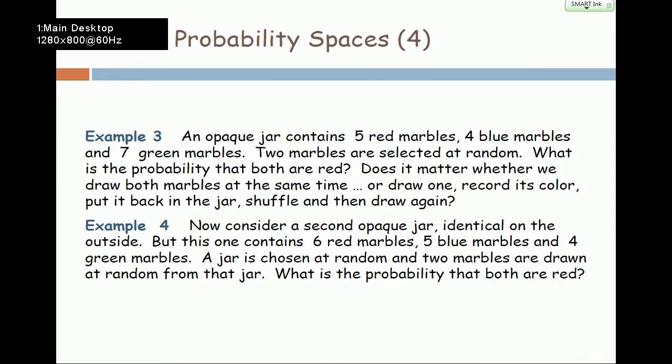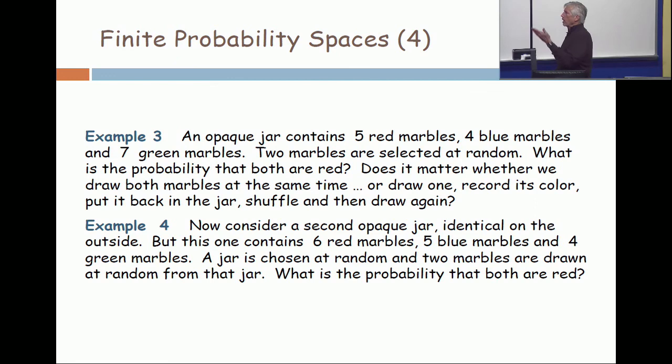We have two opaque jars. The jars are identical from the outside. But one has the 5, 4, 7 distribution. The other one has 6, 5, 4. So the jars are stirred up so you don't know which one is which. You pick a jar at random. And then from that jar, you grab two marbles. What's the probability that they are both red?